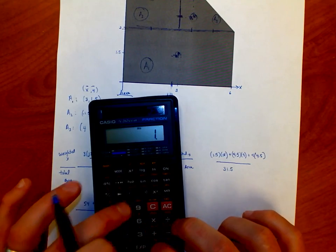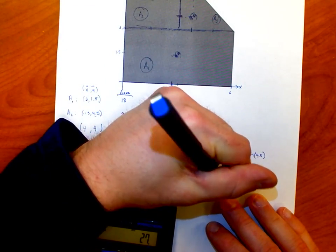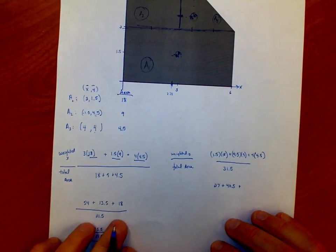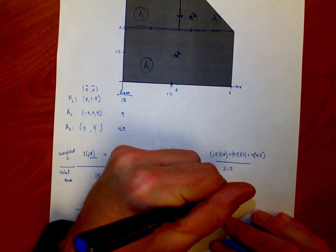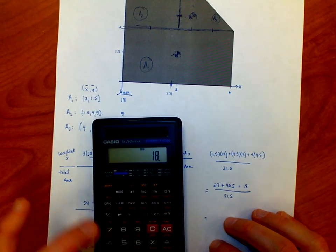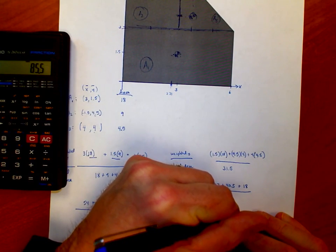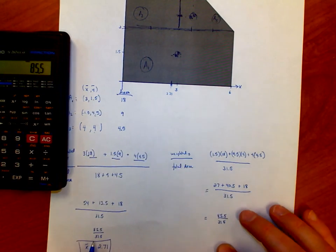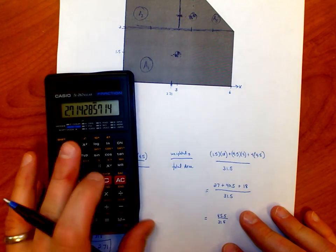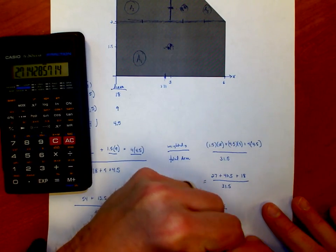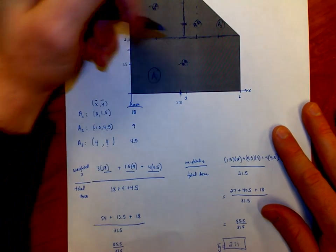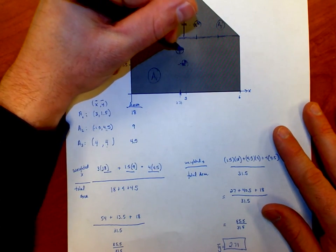Let's go through and just do the math. 1.5 times 18 is 27. 4.5 times 9 is 40.5. And 4 times 4.5, we actually did that in the last one, it's 18. And so we're almost done. 40.5 plus 27 plus 18 gives us a grand total of 85.5 over 31.5, and it turns out it's 2.71 again. Another 2.71. So the average Y coordinate is 2.71. So here's three, it's just slightly lower than that right here. And so the overall centroid for the shape is going to be somewhere in this ballpark.